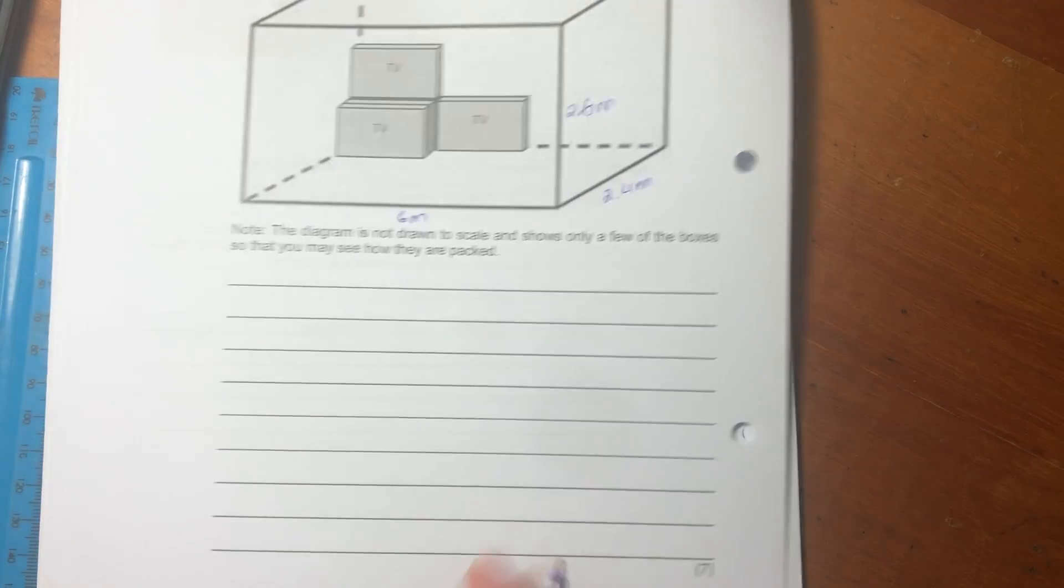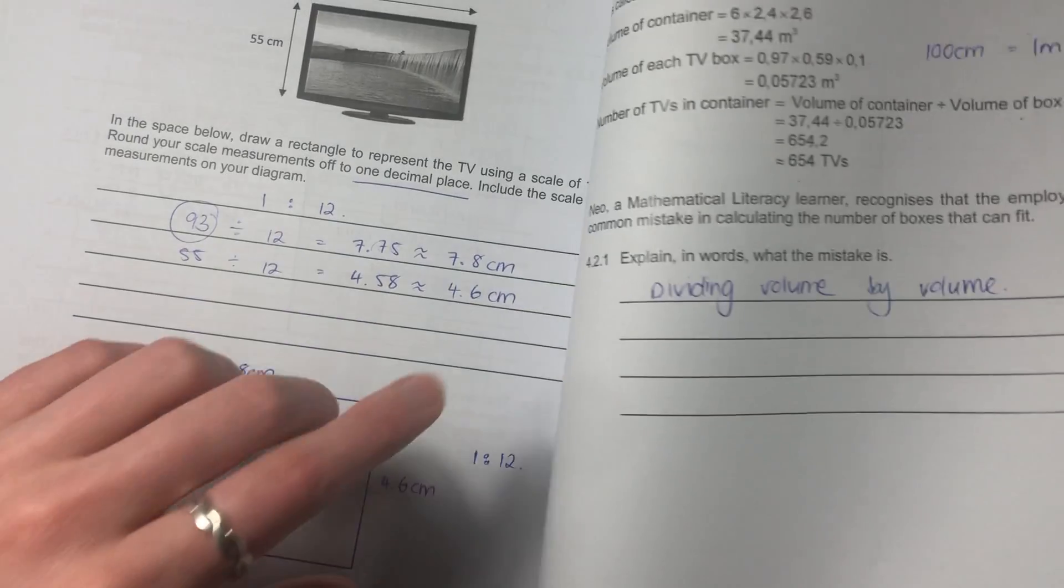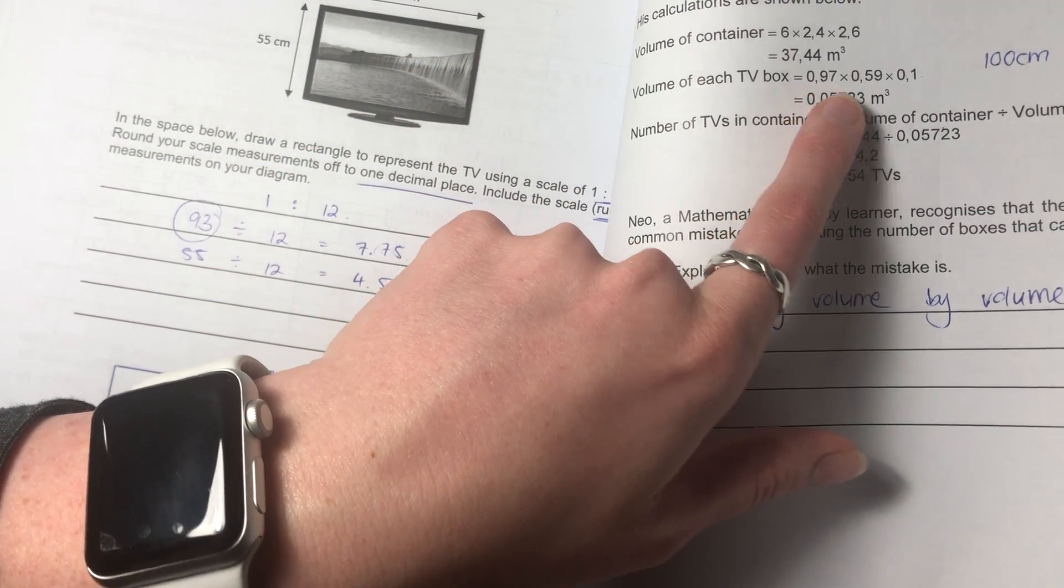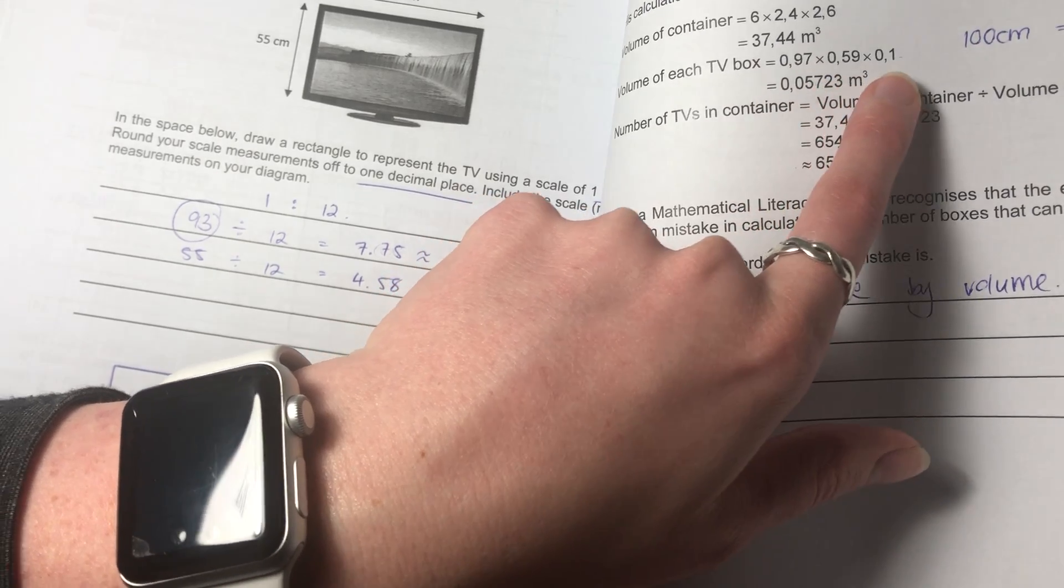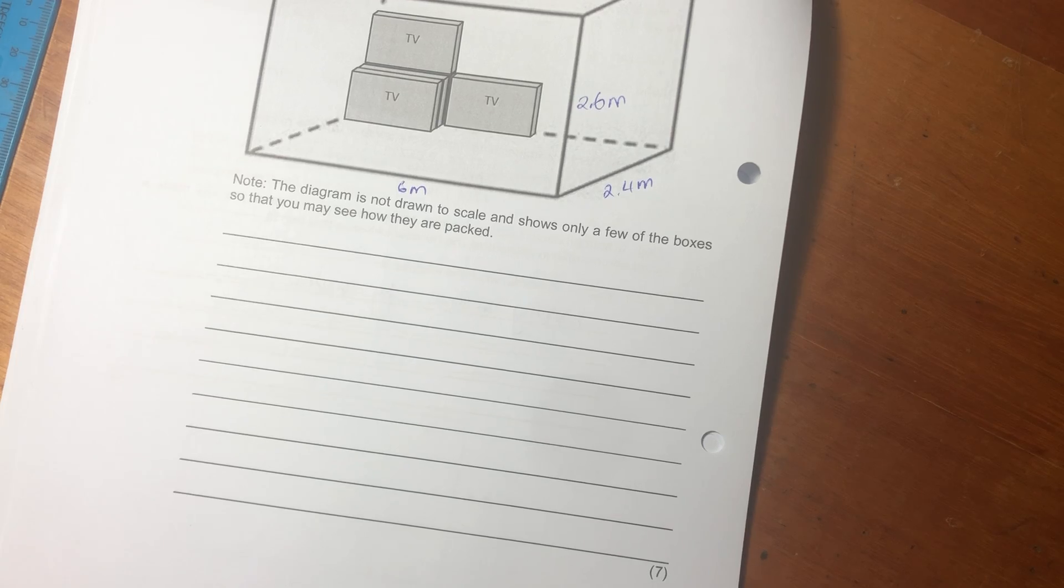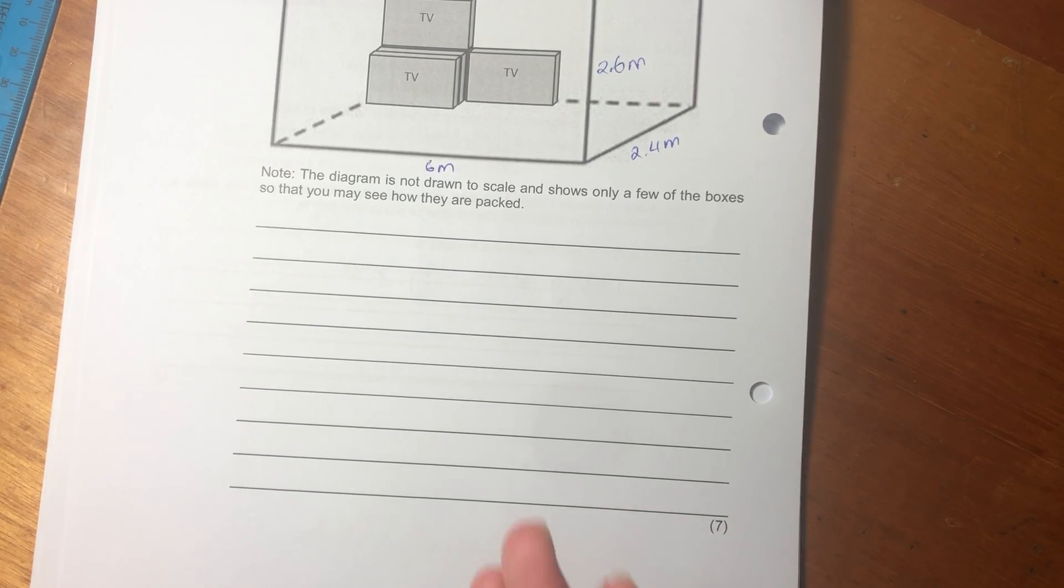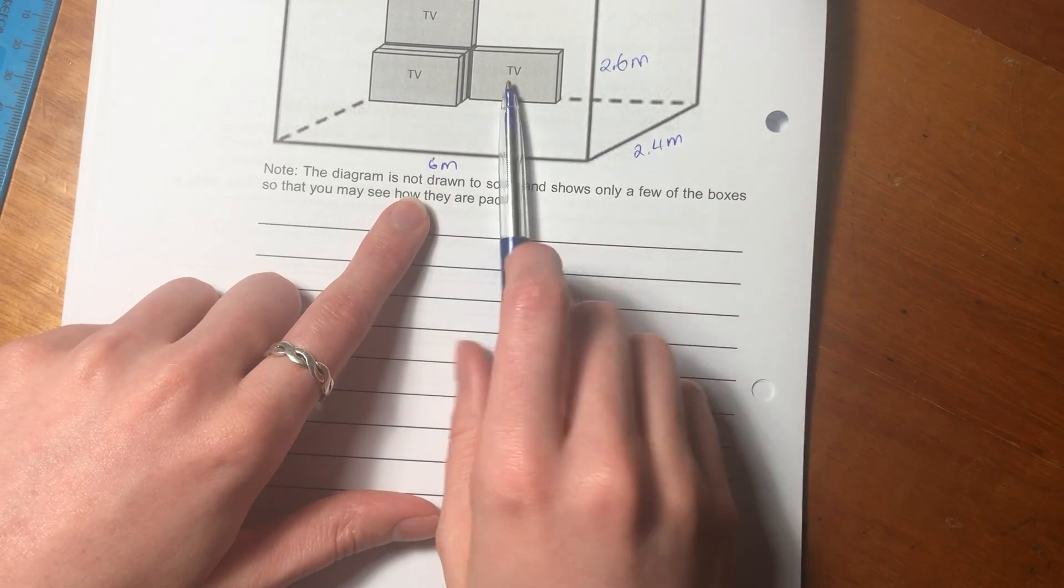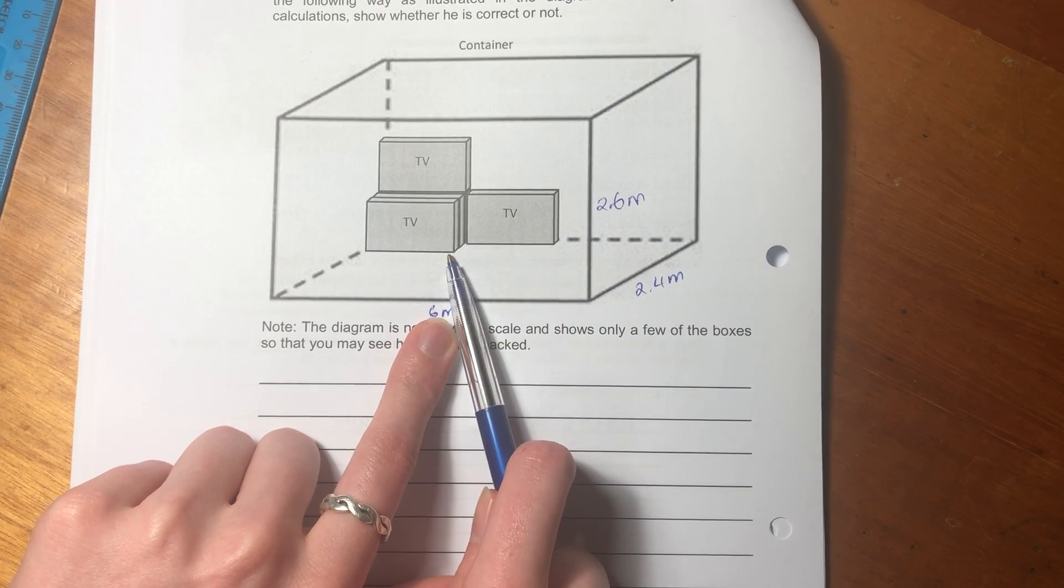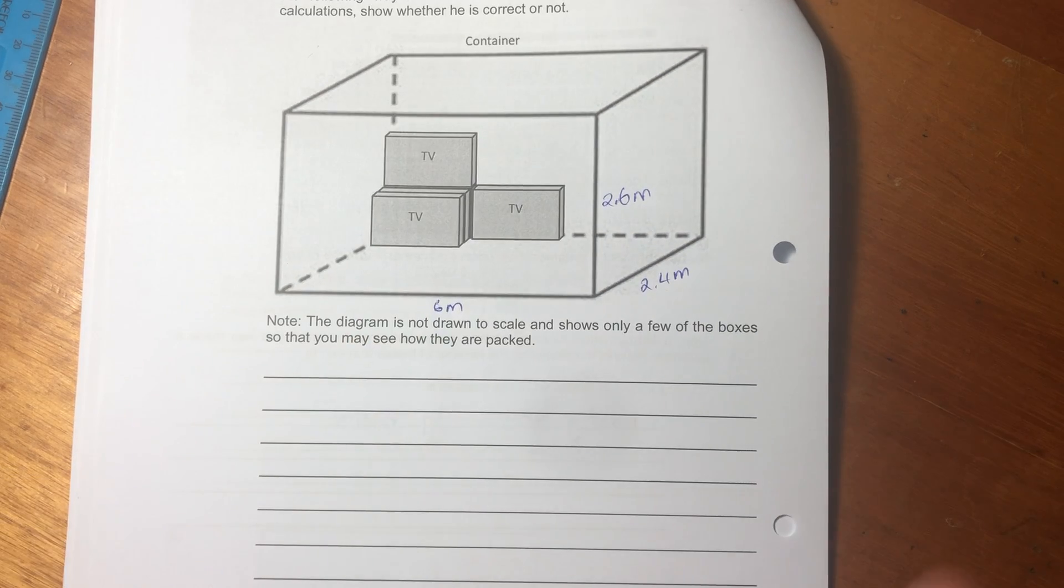So it's 6 meters. I think this is 2.4 meters, and this is 2.6 meters. And the box, which we've just shown over here, they've given us the dimensions here, 0.97, 0.59, and 0.1.